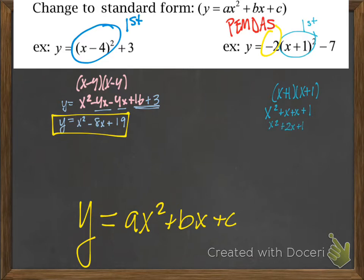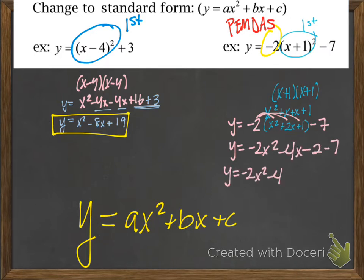And then that is still got to be distributed to the negative 2. And then combining like terms, we have y equals negative 2x squared minus 4x minus 9. That's it.